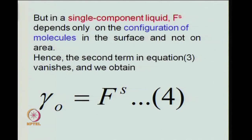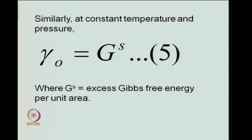Therefore, dropping the second term, we find γ₀ is equal to F_s. This is the relationship we are looking for: surface tension γ₀ equals the Helmholtz free energy per unit area F_s. We could likewise have argued under conditions of constant temperature and pressure, in which case we would have obtained γ₀ equal to g_s, where g_s is the excess Gibbs free energy per unit area.